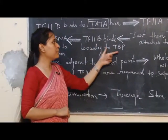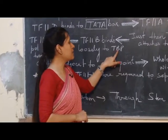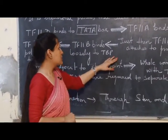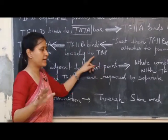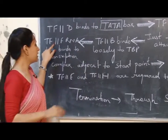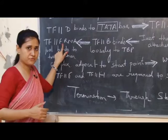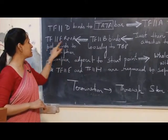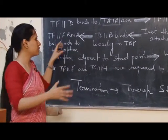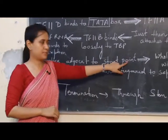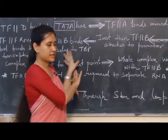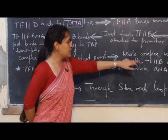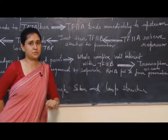After that, TfB will loosely bind with TBP — TBP is the TATA binding protein. These are the proteins which bind to this particular TATA box and are called TATA binding proteins. TfB will bind to this, but loosely, not tightly. After that, the next transcription factor is TfF, which is very important because it combines along with the enzyme RNA polymerase II. Along with this enzyme, TfF comes and binds to that particular site adjacent to the start point. After this whole complex forms, TfB will interact with TfF along with the enzyme, and then the process of transcription will occur.